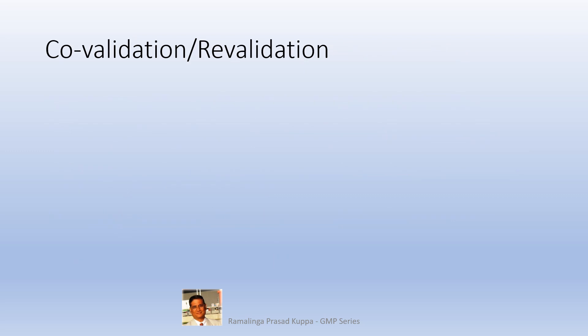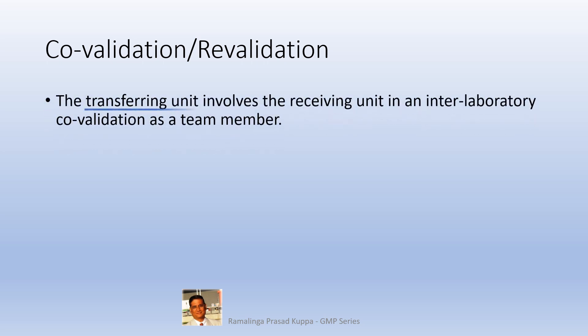Co-validation and revalidation is another approach. The transferring unit involves the receiving unit in an interlaboratory co-validation as a team member. Qualified staff from the receiving unit may be involved along with staff from the originating unit for the method validation project. The receiving unit will be responsible for testing during the entire validation process, which helps to assess the reproducibility of the data. The validation should be done as per USP chapter 1225.